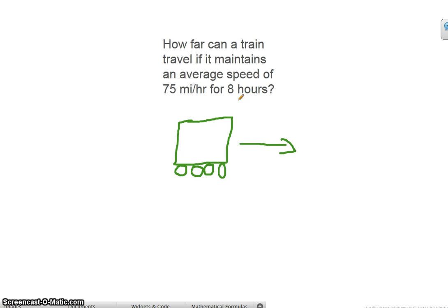My name is Edgar and I'm going to show you how to solve this physics problem. Here's the train, like it says right here, how far can a train travel if it maintains an average speed of 75 miles per hour for 8 hours.